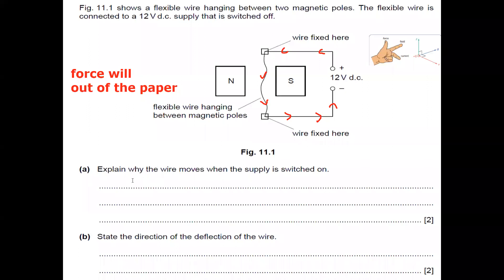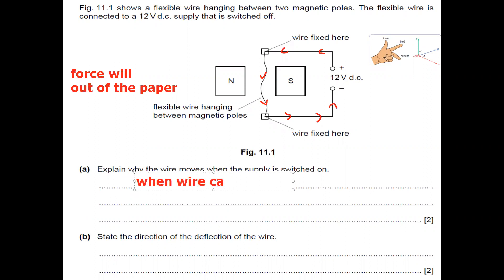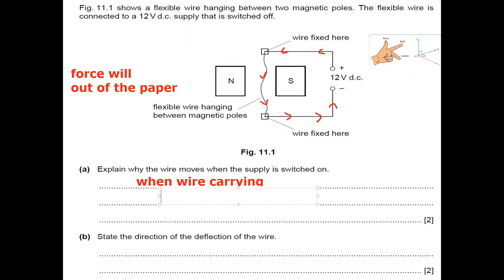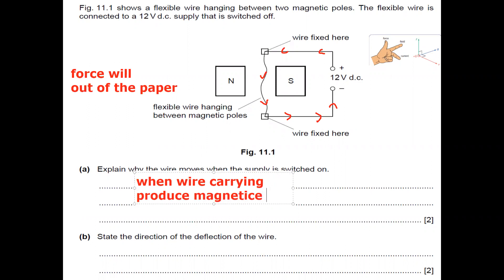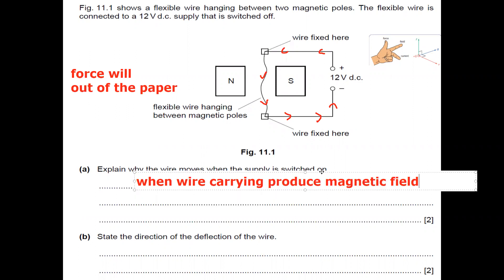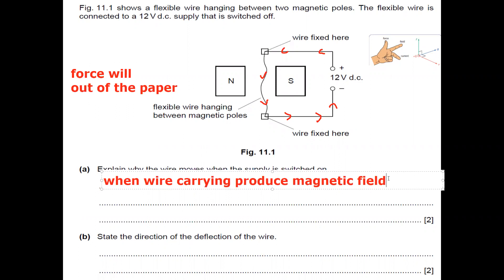Why does the wire move when the supply is switched on? There are two reasons. First, the wire which is carrying a current produces a magnetic field. Second, the magnetic field of the wire interacts with the magnetic field of the magnet.